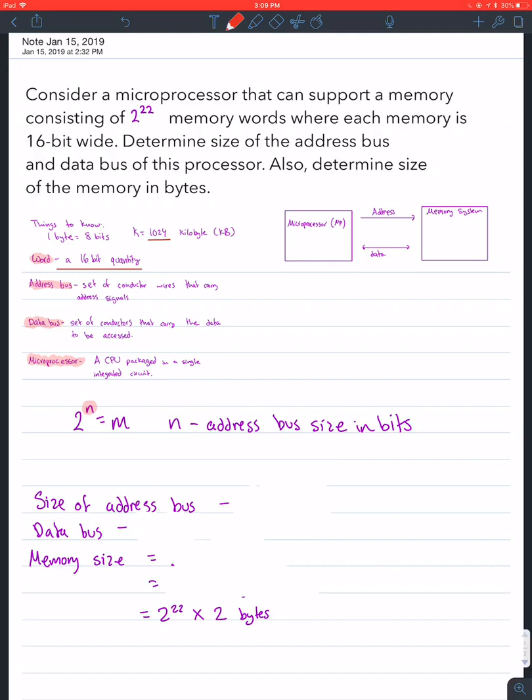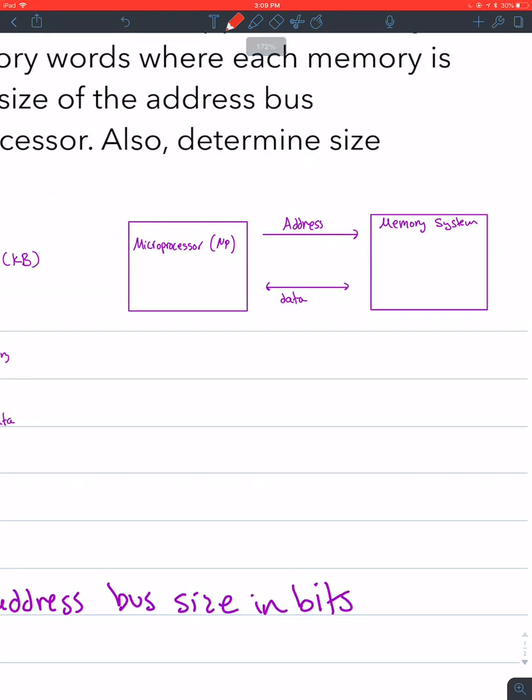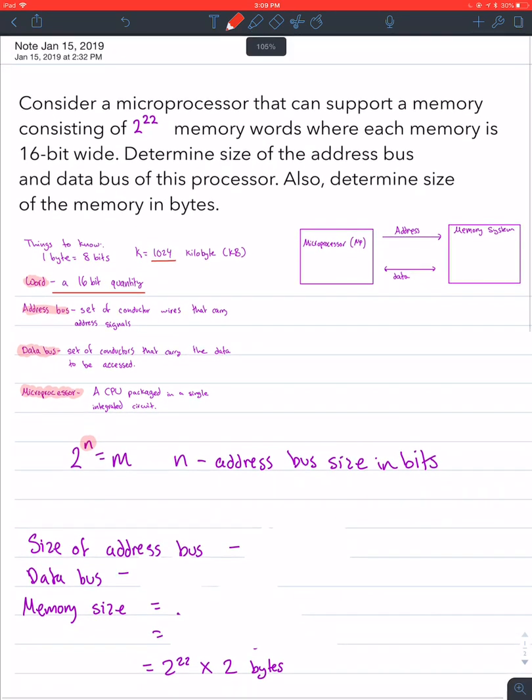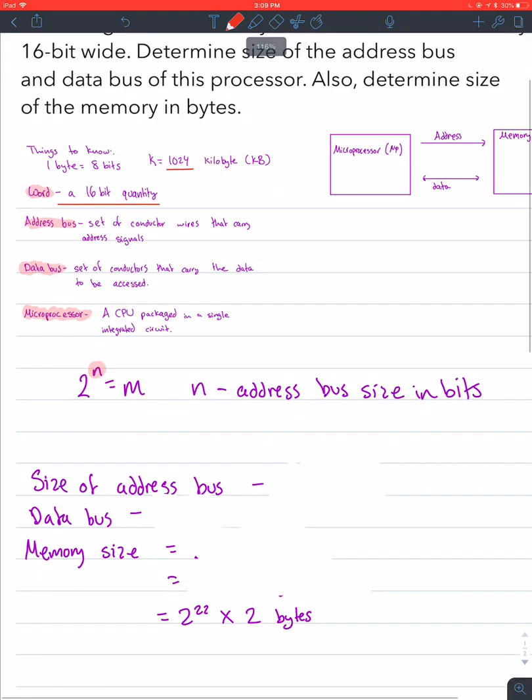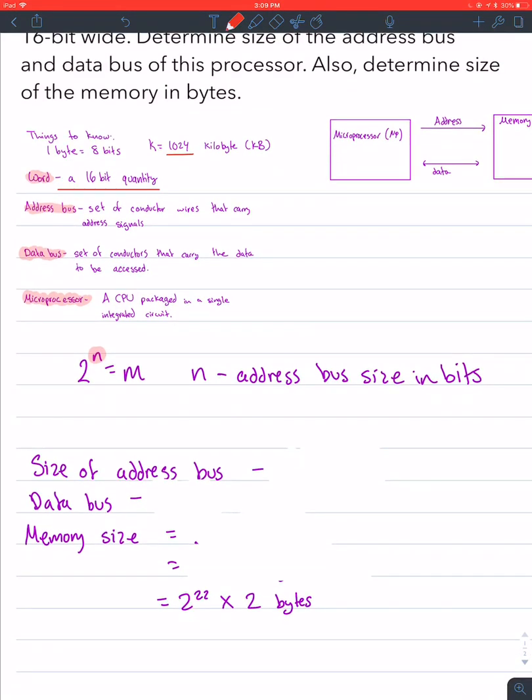On the side here, just a little diagram to show you address goes only one way into the memory system and data bus goes both ways. Microprocessor is just a CPU package in a single integrated circuit.